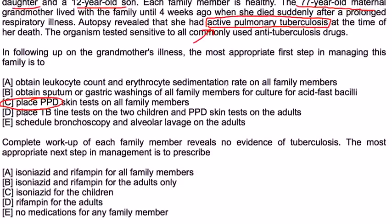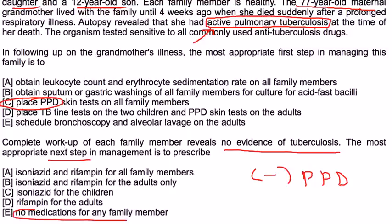Next question: complete workup of each family member reveals no evidence of tuberculosis. The most appropriate next step is to... A negative PPD, which is what happened, indicates that there's no TB, there's no latent TB, and there's no active TB. So therefore, there's no indication for any treatment, no medications.